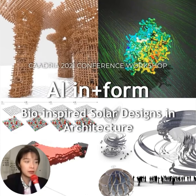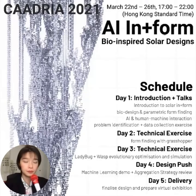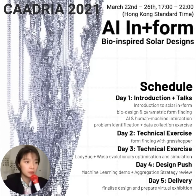The goal is to introduce the four core ideas of this workshop: solar design, bio-inspired form finding, cellular automata and aggregation, and artificial intelligence and human-machine interaction. This workshop is about the technical capacity of these ideas as much as their histories and theories, their social economic values, and the possibilities of synthesizing them.